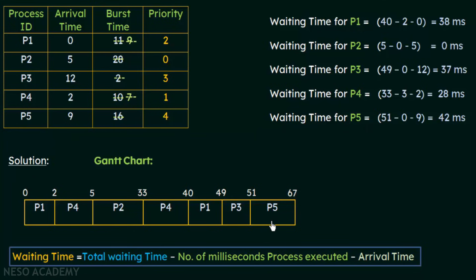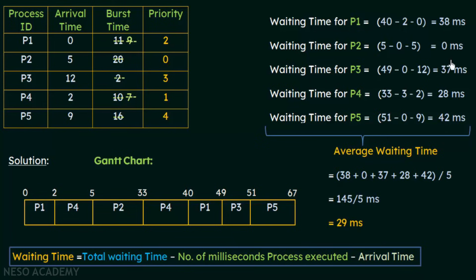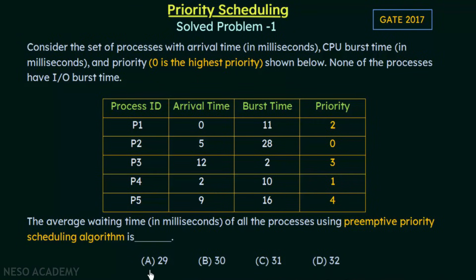For P5, it got the CPU at the 51st millisecond and never executed before, with arrival time of 9. Waiting time for P5 = 51 − 0 − 9 = 42 milliseconds. The average waiting time = (38 + 0 + 37 + 28 + 42) / 5 = 145 / 5 = 29 milliseconds. Looking at our options, option A is 29 milliseconds — that is the correct answer.